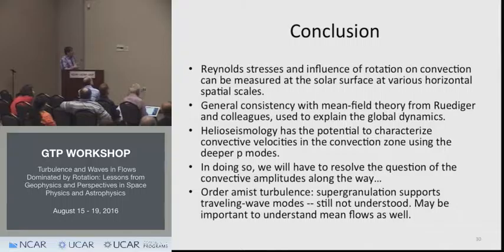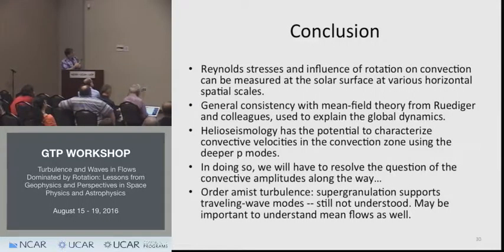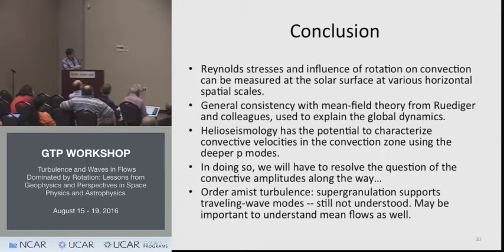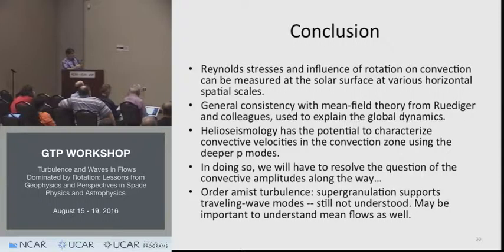To conclude: we are able to measure Reynolds stresses at the surface of the sun as well as the influence of rotation on convection, with general consistency with mean field theory developed mostly by Rüdiger and colleagues. This theory is the origin of understanding the global dynamics of the sun. Helioseismology has the potential to characterize convective velocities deeper in the convection zone using P modes — we haven't done that yet, but it is work for the future, and we will have to resolve the question of convective amplitudes.